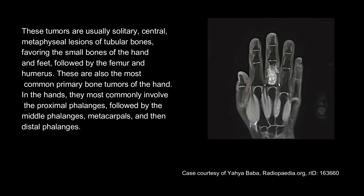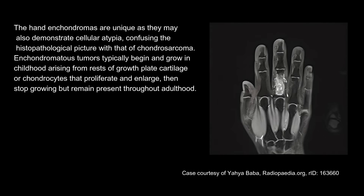In the hands, they most commonly involve the proximal phalanges, followed by the middle phalanges, metacarpals, and then distal phalanges. Hand enchondromas are unique as they may also demonstrate cellular atypia, confusing the histopathological picture with that of chondrosarcoma. Enchondromatous tumors typically begin and grow in childhood, arising from rests of growth plate cartilage or chondrocytes that proliferate and enlarge, then stop growing but remain present throughout adulthood.